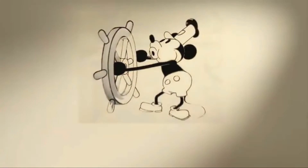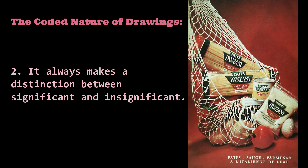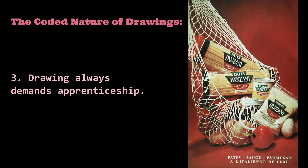The relationship between signifiers and signified in photographs can be explained by comparing photograph and drawing. In drawing, the coded nature has three levels. First, it always requires a set of rules to make a scene or object, and always has a connotative coding. In comics, for example, small details in a drawing hide a message that needs to be deciphered. Second, it always makes a distinction between significant and insignificant — the drawing reproduces only the minimal things it wants to represent or emphasize. In simple words, the annotation of drawing is less pure than in photography. Lastly, drawing always demands apprenticeship. The literal or denoted image always facilitates its connotation, meaning the connoted message can never be separated.